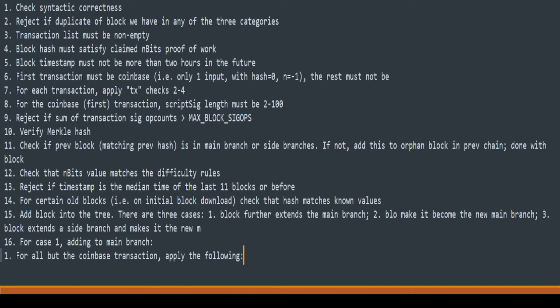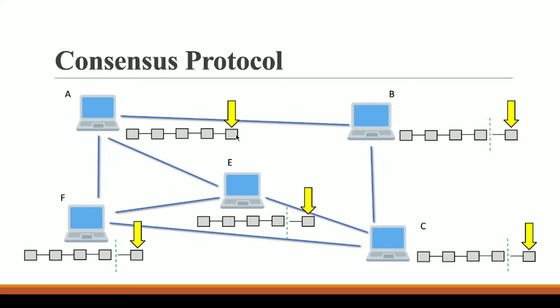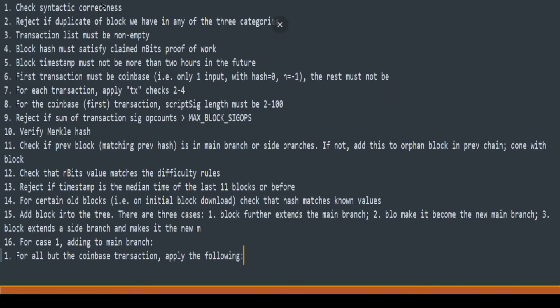In this consensus protocol, the person who is adding a block has to present a proof that the block they are adding is a correct block. That is why this algorithm is also known as the proof of work algorithm in the case of Bitcoin. The person adding this block has to present a proof by stating that they have worked on this block in order to add it. That proof is the amount of energy being consumed to create this block, because in a proof of work algorithm a lot of energy and power is required.